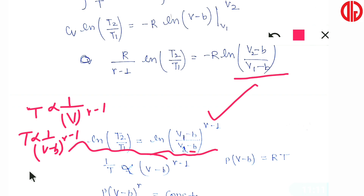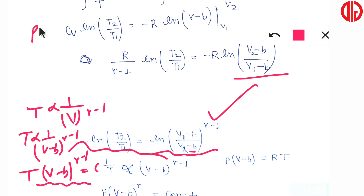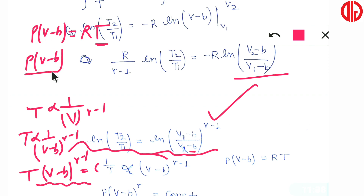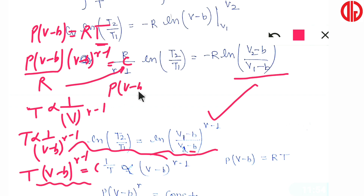Now from the gas equation p(v−b) = RT, we get T = p(v−b)/R. Substituting this into T·(v−b)^(γ−1) = constant: [p(v−b)/R]·(v−b)^(γ−1) = constant. The R goes into the constant, giving p·(v−b)^γ = constant. This is exactly what we had to derive. So for a reversible adiabatic process executed by this gas, p(v−b)^γ = constant.